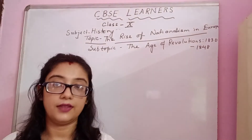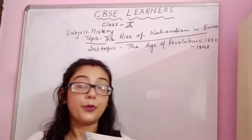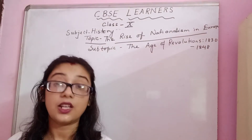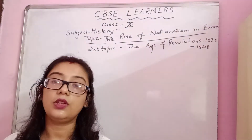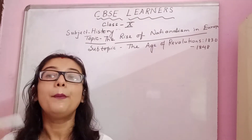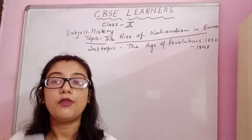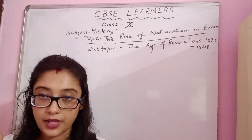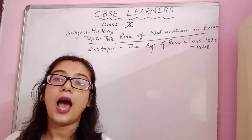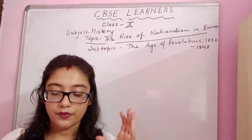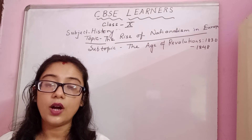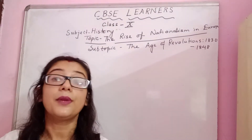Now, who are these educated middle class elite? Among them were professors, school teachers, clerks, and members of the commercial middle classes. They were middle class — not rich — and most importantly, they were educated. Since they were educated, they knew the benefits of liberty and nationalism. They understood that these things would benefit society and that every person would have freedom of speech and be treated as equal.